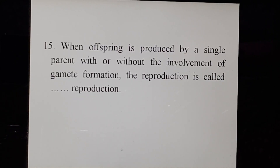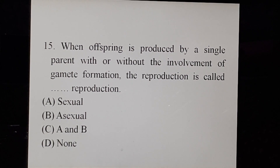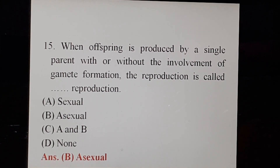Question 15: When offspring is produced by a single parent with or without the involvement of gamete formation, the reproduction is called dash reproduction. A: sexual, B: asexual, C: a and b, D: none. Correct answer is Option B - asexual reproduction. When an organism reproduces by a single parent with or without the involvement of gamete formation, the mode of reproduction is known as asexual mode of reproduction.